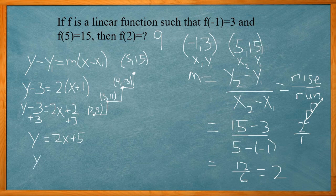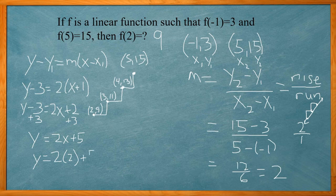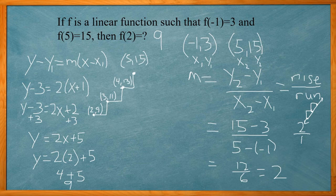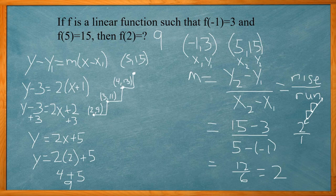Now, if I plug in 2 for x, 2 times 2 plus 5 gives me 4 plus 5 or 9. So that's the same answer we got using just the slope. And just using the slope would be a faster technique here versus coming with the whole equation and then solving for f of 2.